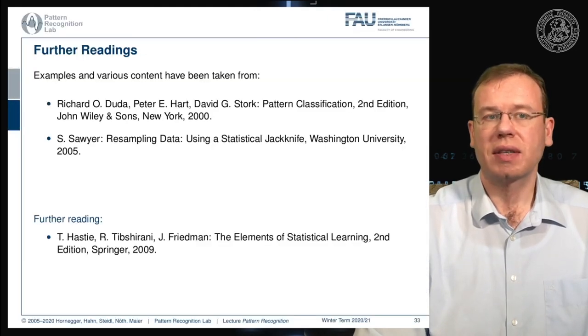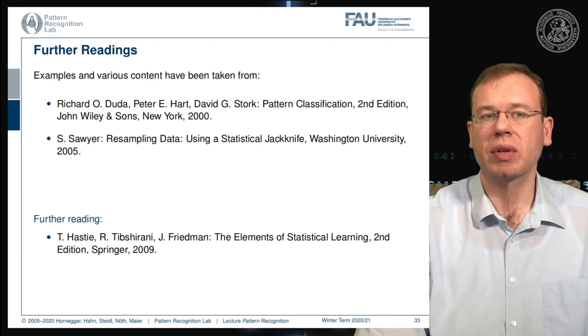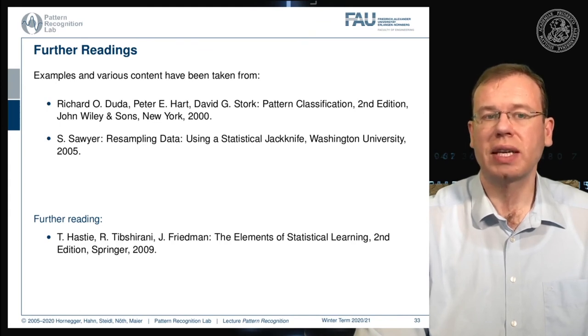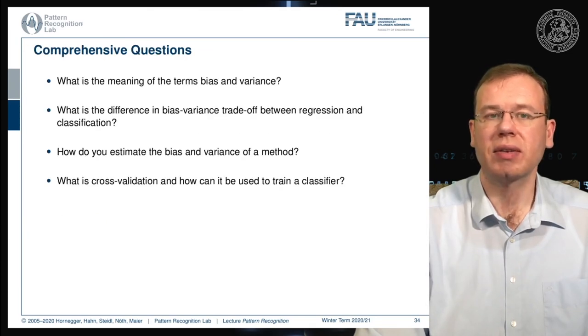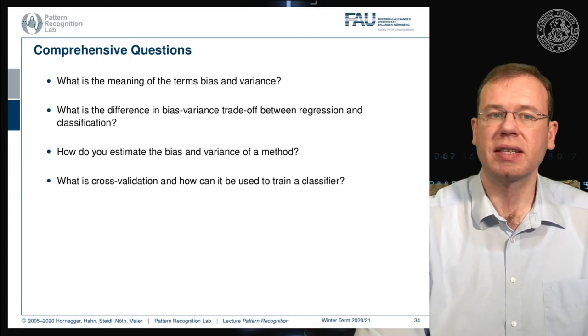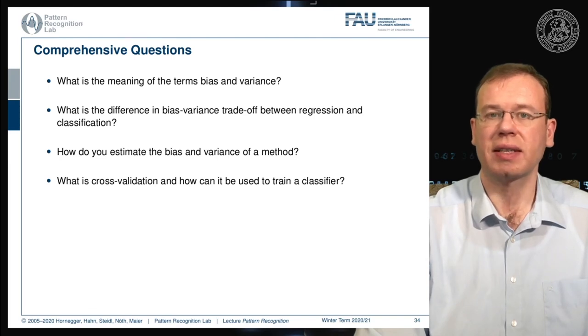For further reading: Duda and Hart is a very good book with excellent examples; also Sawyer's resampling data using a jackknife, and The Elements of Statistical Learning. After watching these last two videos you should be able to answer: what is the meaning of bias and variance, what is the bias-variance trade-off, and how can you estimate bias and variance of a method if you have only a finite set. Thank you very much for watching, and looking forward to seeing you in the next video.